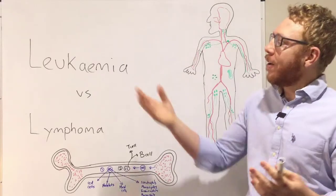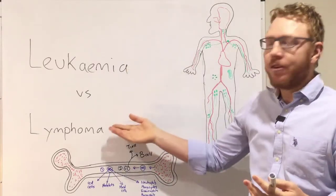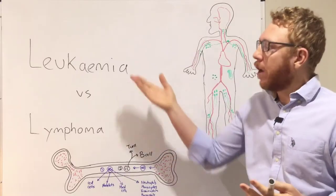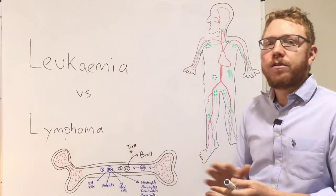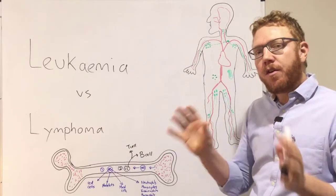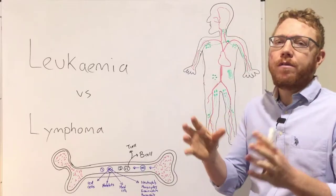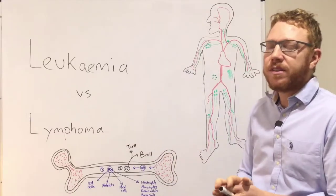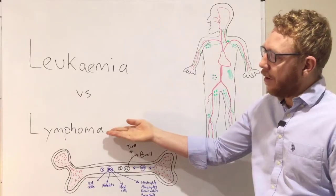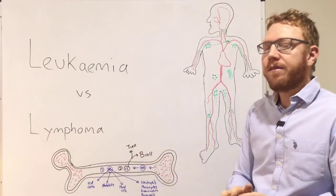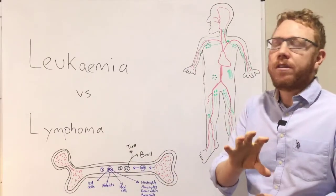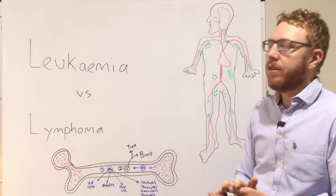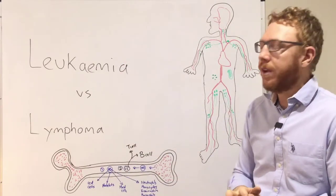Welcome to this video on Leukaemia versus Lymphoma. This is going to be the first of three videos that will go through these types of cancers. This first video is a quick overview of the main differences, then video two will cover lymphomas — specifically Hodgkin's and non-Hodgkin's — and then the third video will go into the different types of leukemias.